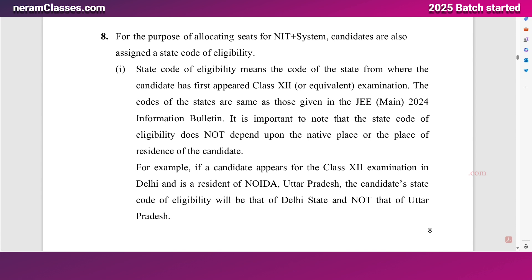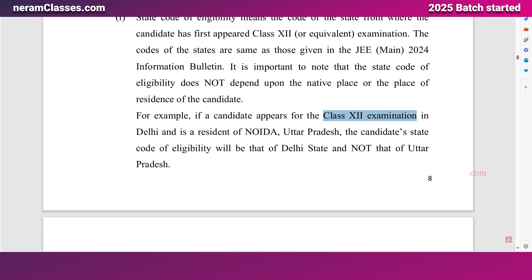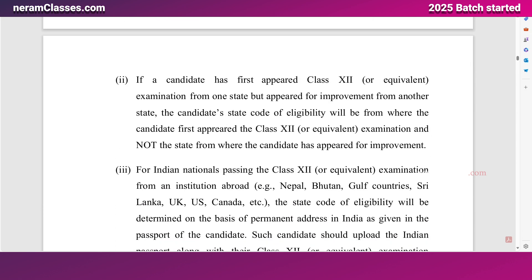For the purpose of allocation of seats in NITs, candidates are assigned a state code of eligibility. The state code of eligibility is determined by where the candidate first appeared in the 12th standard examination. For example, if you are a resident of Noida but wrote your 12th standard board exam in Delhi, your state code of eligibility will be Delhi — not Noida. If you appeared for an improvement or arrear exam, your first 12th standard appearance state is still considered, not the improvement center state.